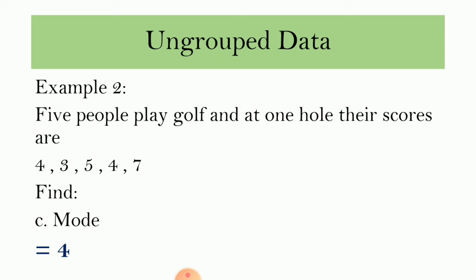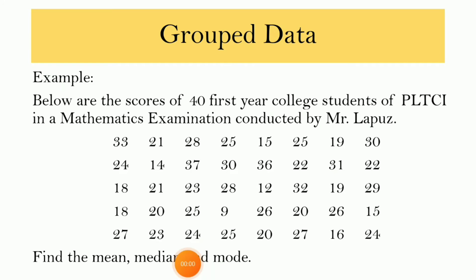So that is measures of central tendency for ungrouped data. Next is grouped data. As mentioned, it is grouped if the data are 30 and above. For example, below are the scores of 40 first-year college students of PLTCI in a mathematics examination conducted by Mr. Lapus. We need first to construct a frequency table. A frequency table is a tabular arrangement of the data.